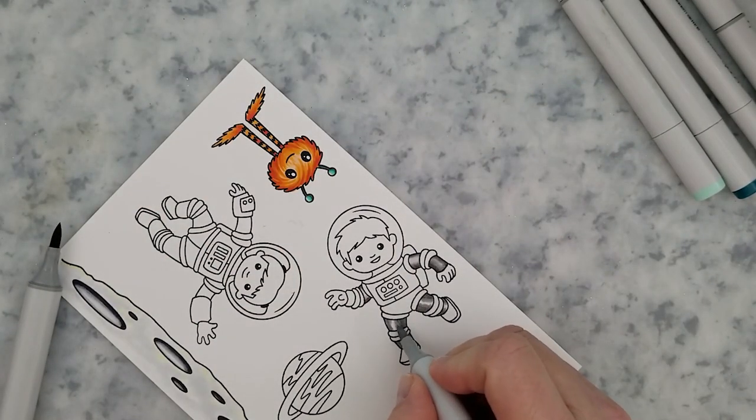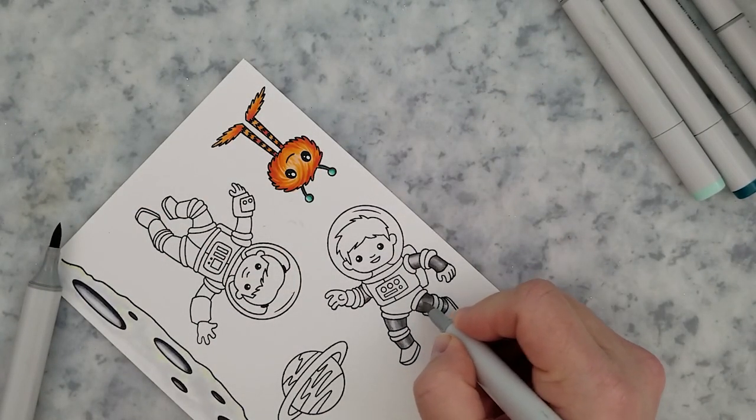So I used that same flicking technique for his feet and then for the little antennas on his head, BG18, BG15, BG13 to finish that off.